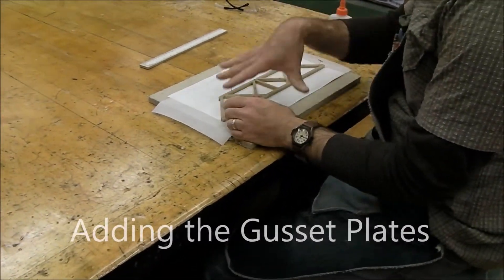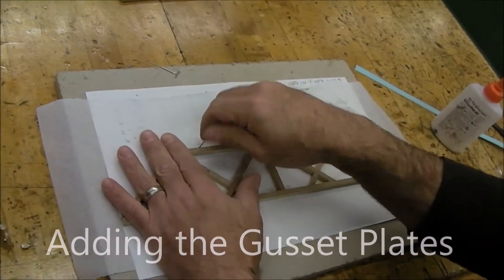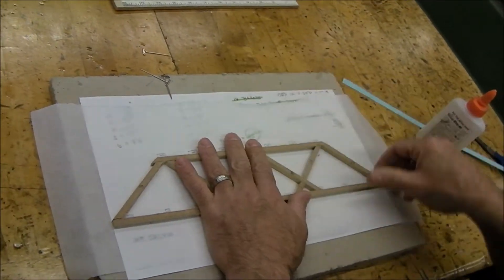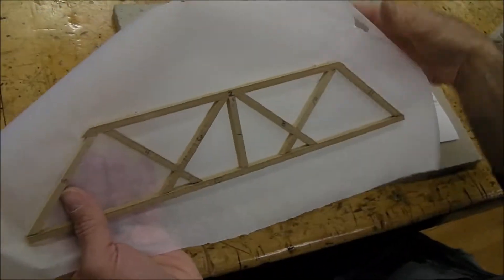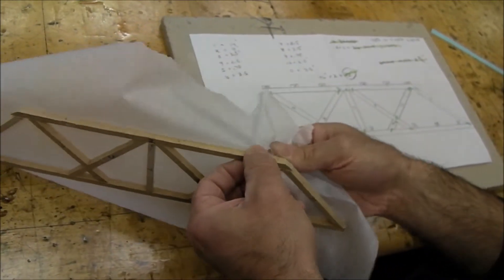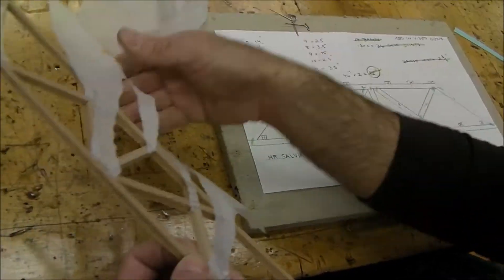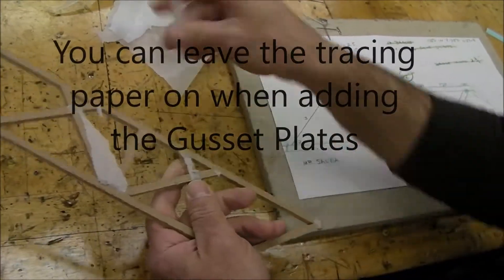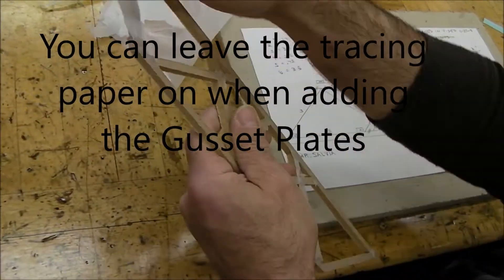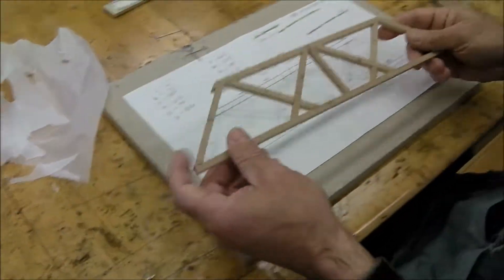What we're going to do now is take this bridge side off, so pull the pins out. We'll just peel that off. Then, what we can do to make this a little stronger...